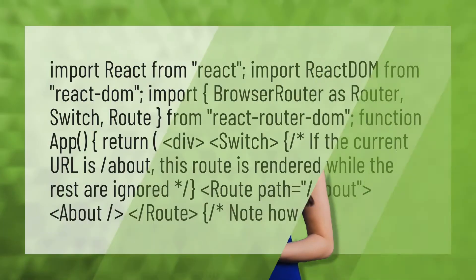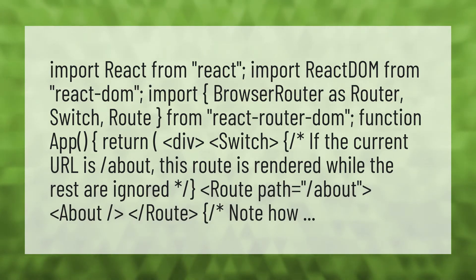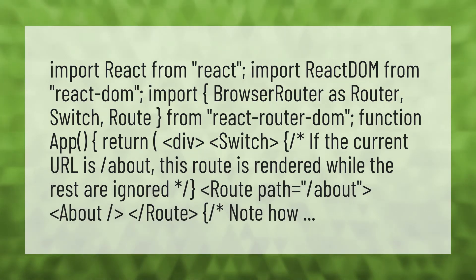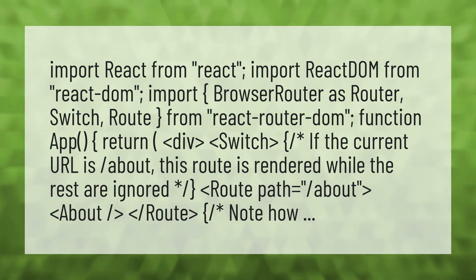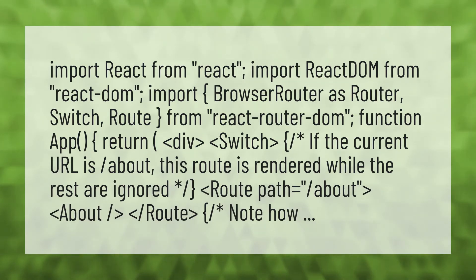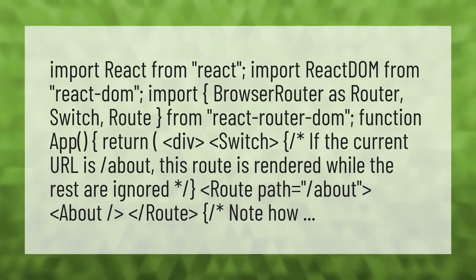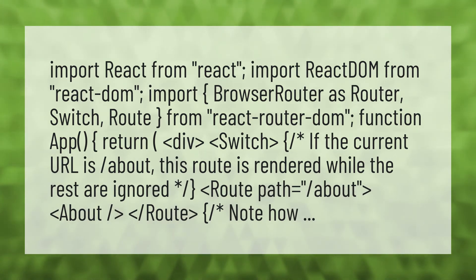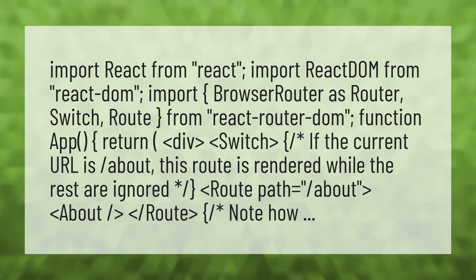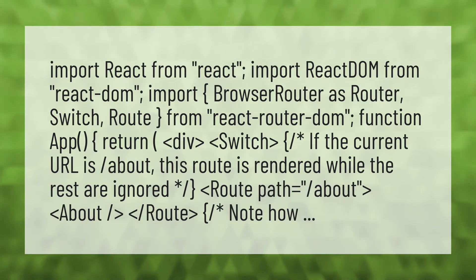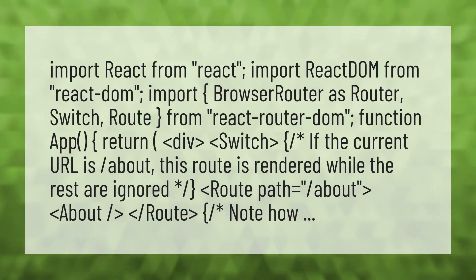Import React from 'react', import ReactDOM from 'react-dom', import BrowserRouter as Router, Switch, Route from 'react-router-dom'. Function App returns a div containing a Switch. If the current URL is '/about', this Route is rendered while the rest are ignored. Route path equals '/about' renders the About component. Note how this works.